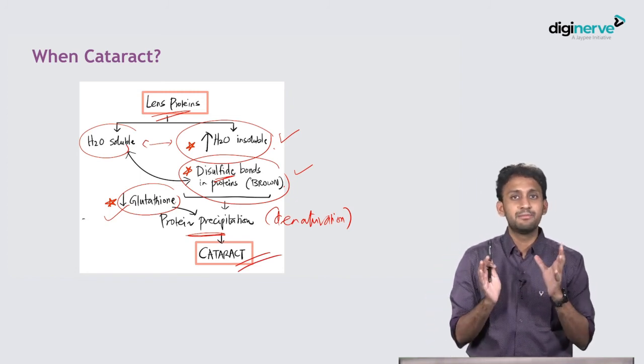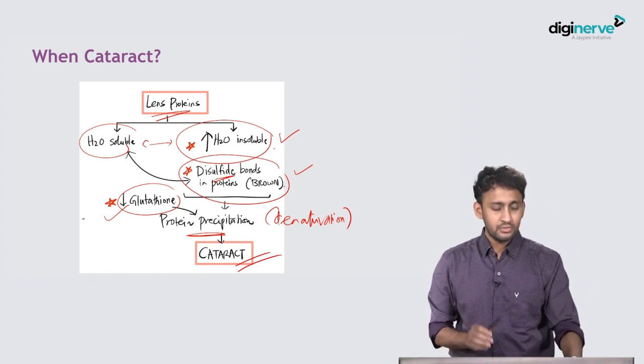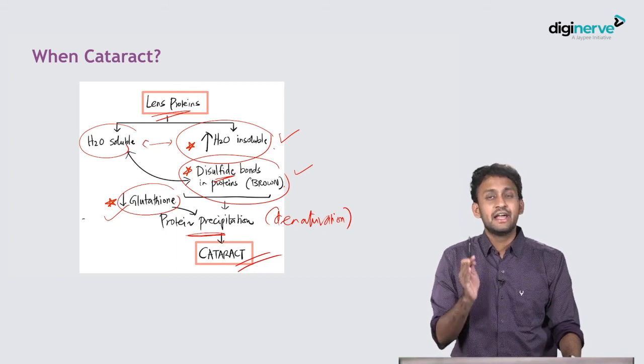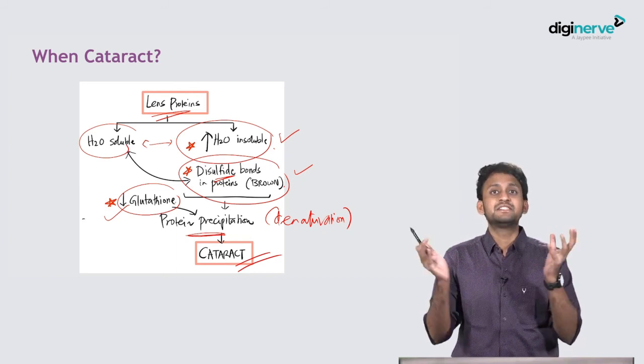Please don't forget, it's a very important thing to consider. Why do you have cataract? It's because when the proteins are going to get precipitated.